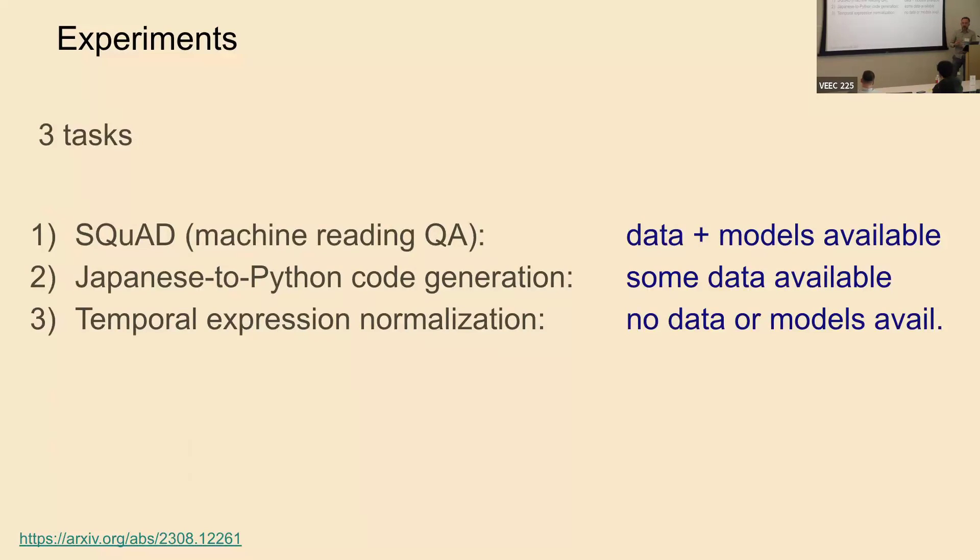Finally, we have temporal expression normalization. This is a task where nobody has created a training dataset, but there are test datasets. This is kind of representative of the weird things that people want to do with prompting, like please format this CSV table into a LaTeX table. That's like 80% of my ChatGPT usage. A lot of people do that sort of thing.